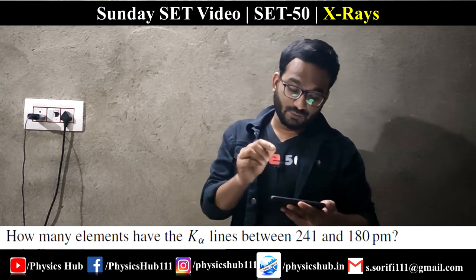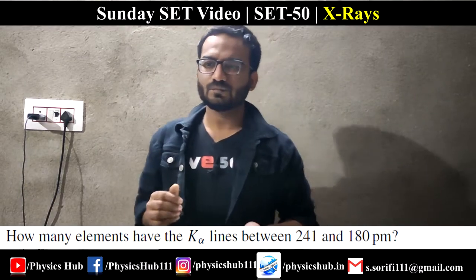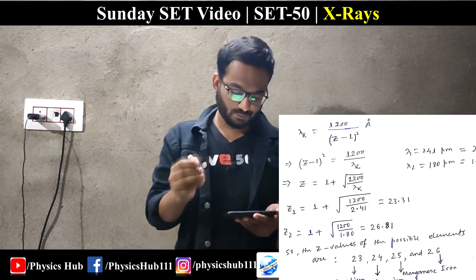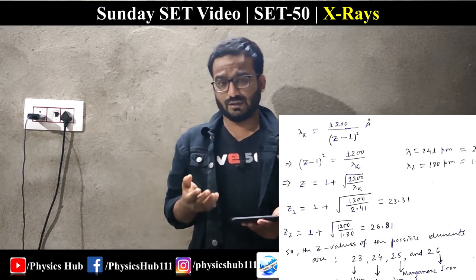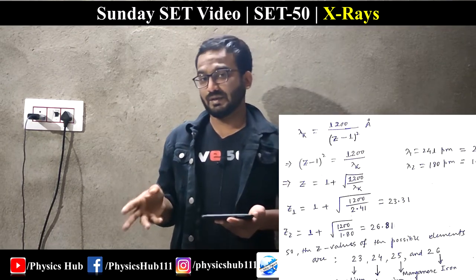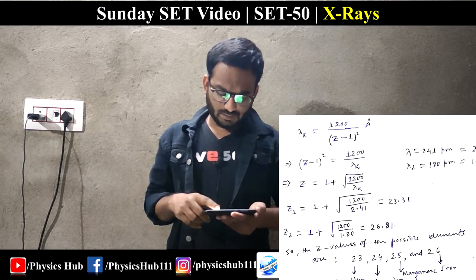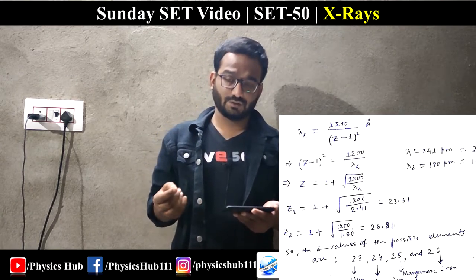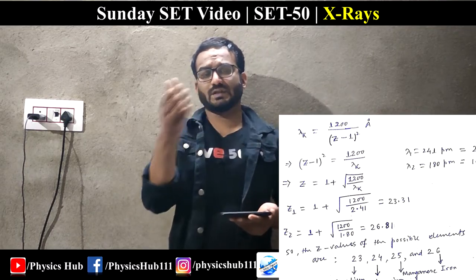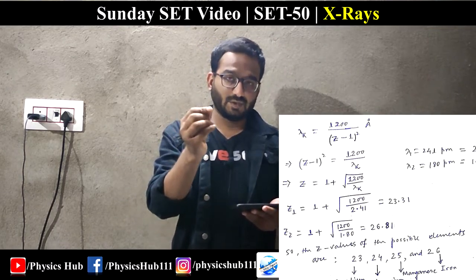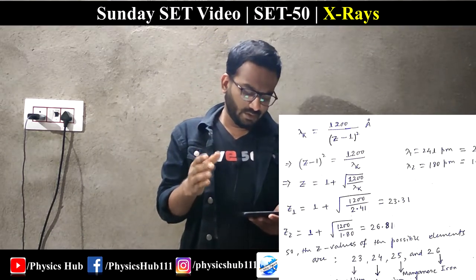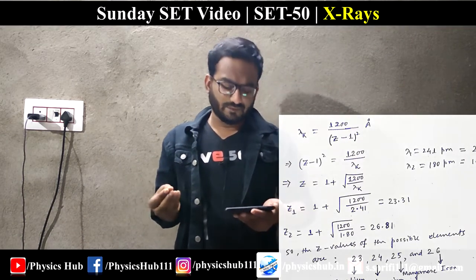Question 5: How many elements have Kα lines between 2.41 and 1.80 angstroms? Using λ_Kα = 1200/(Z − 1)² and rearranging: Z = 1 + sqrt(1200/λ_Kα). For λ = 2.41 Å, we get Z ≈ 23.31, so Z_min = 23. For λ = 1.80 Å, we get Z ≈ 26.81, so Z_max = 26.